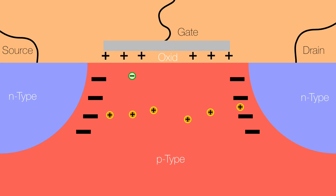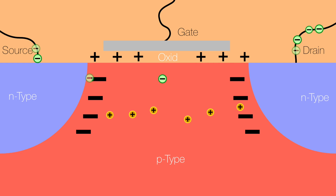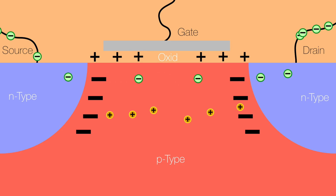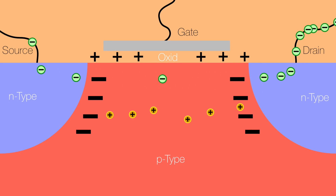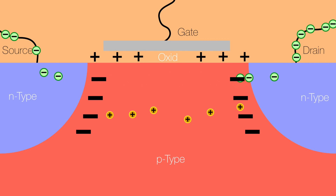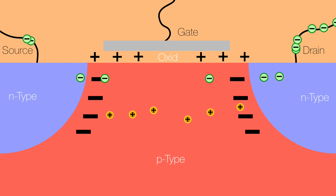But how can the transistor be used as an amplifier? If you increase the voltage on the gate even more, more electrons will get attracted over into the conducting channel, and so the current moving through the channel will be increased. This means that now you have a voltage-operated amplifier — the higher the voltage, the more electrons will move through the channel and the higher the current becomes.